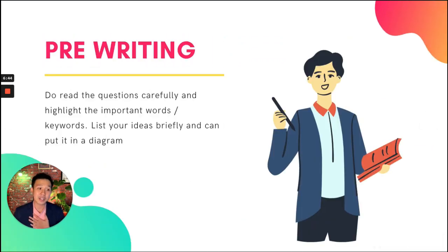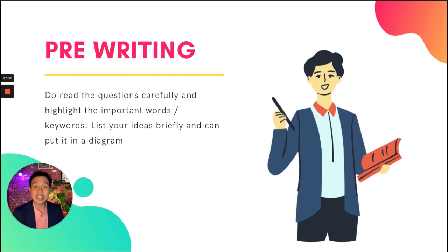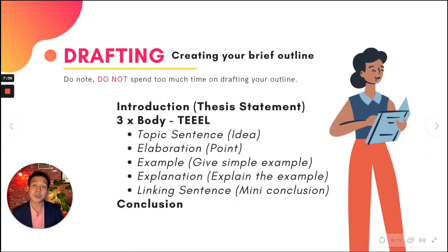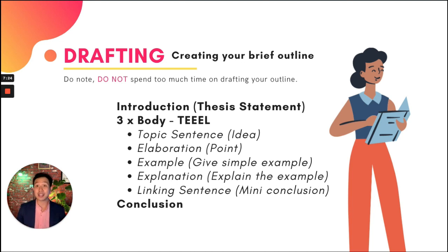In pre-writing, read the question carefully, highlight the important words, list your ideas briefly, and put them in a diagram. For drafting, create a brief outline. Remember, do not spend too much time drafting — just write points, not full sentences, because writing full sentences at this stage is a waste of time. Write bullet points and then connect them later when writing your full essay.